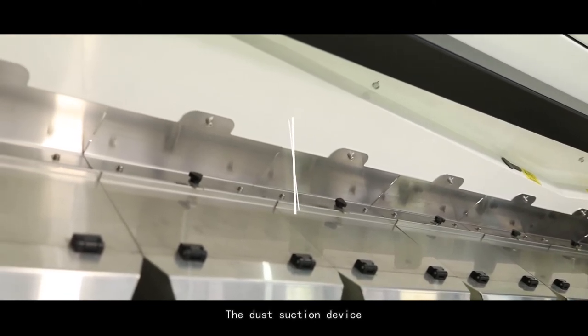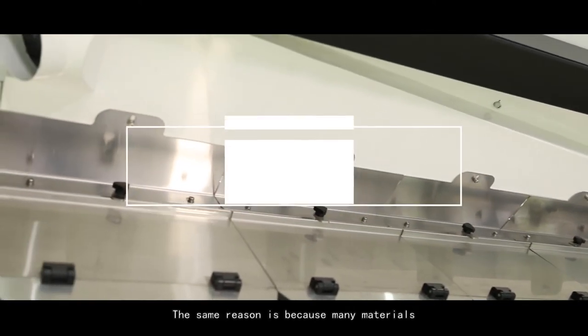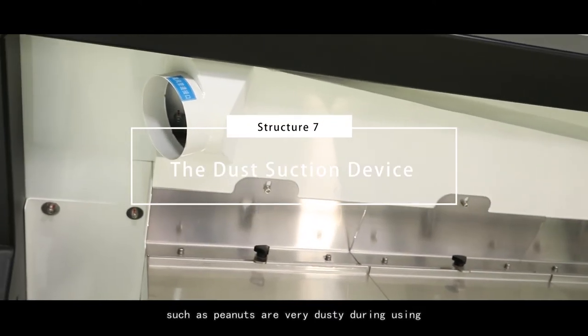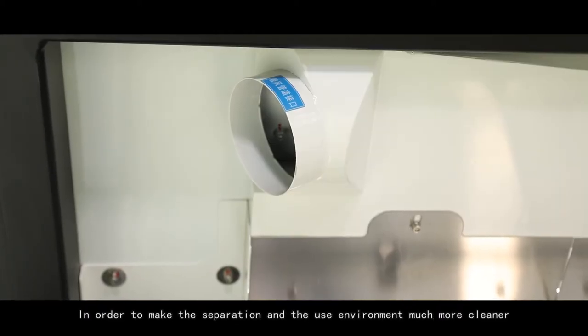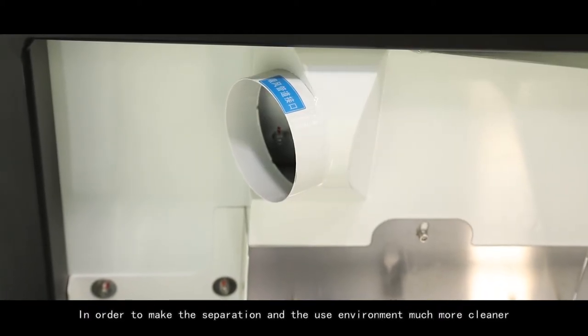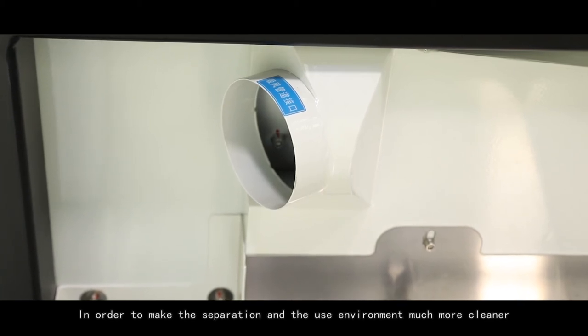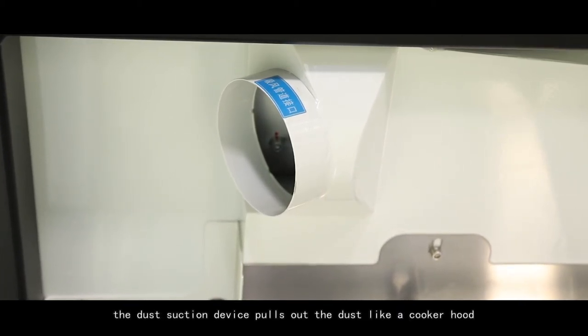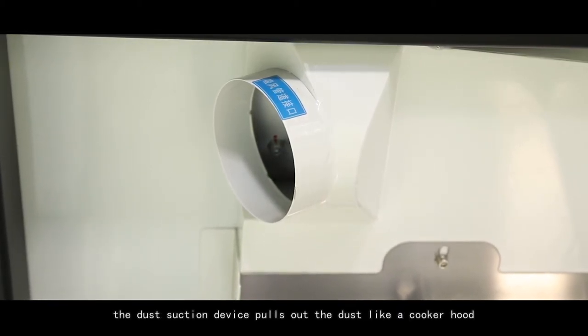The dust suction device. The same reason is because many materials, such as peanuts, are very dusty during using. In order to make the separation in the use environment much more cleaner, the dust suction device pulls out the dust like a cooker hood.